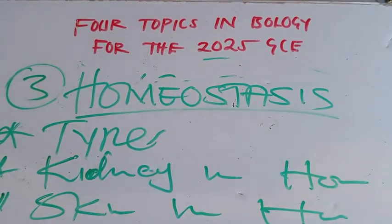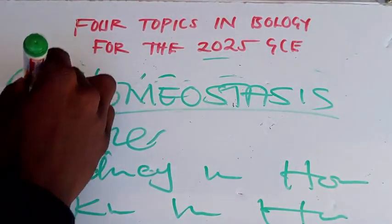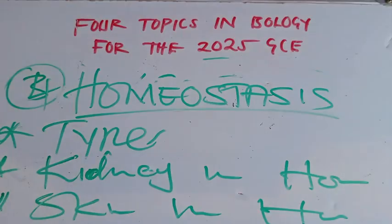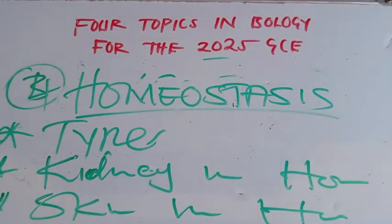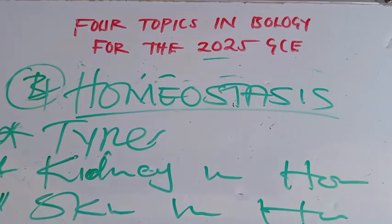These are the four important topics you need to revise as thoroughly as possible — Genetics, Ecology, Excretion, and Homeostasis. Whether you like it or not, they are going to be in your exam, so make sure you revise them.